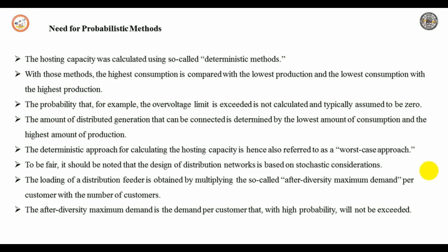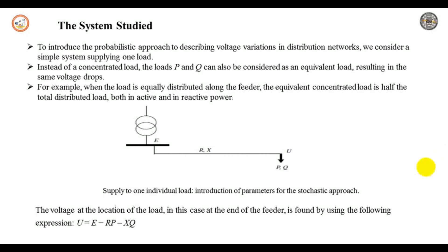In the case of strong correlation between production and consumption, the after diversity minimum net demand could be a suitable design parameter. A simple guideline for estimating their value would require large amounts of measurements and simulations to better understand the stochastic properties of consumption together with different types of generation. We will attempt to develop some of these methods here, illustrating the stochastic design method for a simple system.